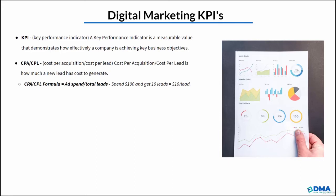The first KPI is CPA — cost per lead, or cost per action or acquisition. This essentially means how much it costs us to generate a new lead or a new opportunity. The formula is ad spend divided by total leads. For example, if we spend $100 and we get 10 leads, that equals $10 per lead — so $10 is our cost per acquisition.